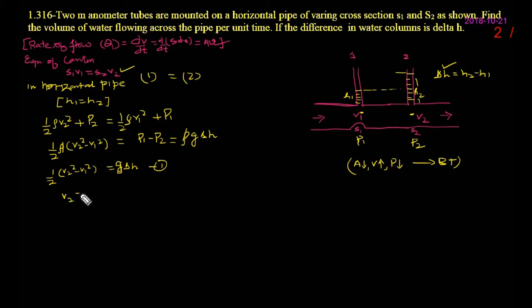As in equation of continuity, I can find out the value of V2. V2, I can write that will be S1 upon S2 into V1. Now, put in equation 1. It becomes half into V2 is S1 V1 upon S2, square of this also, V1 square is equal to G into delta H.